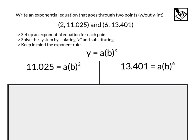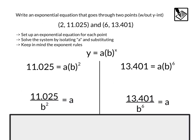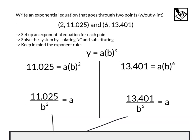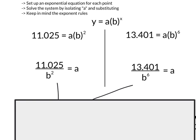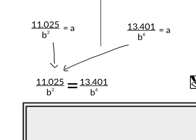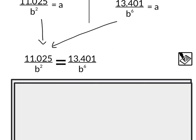Now if we want to solve for a, we can divide both sides by the b variable. So we'll divide both sides by b squared. That cancels out, and we have this over b squared. Divide by b to the sixth. That becomes 13.401 over b to the sixth. And finally, since we have a isolated, we can take both of these equations and we can kind of merge them together, and we will set up this equation right here. We've got 11.025b squared equals, instead of a, 13.401 over b to the sixth.